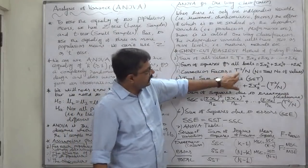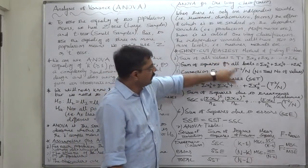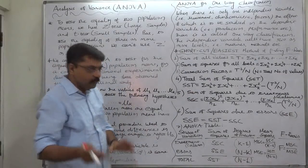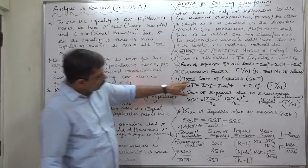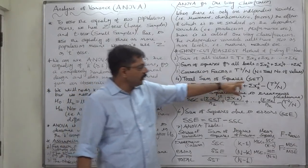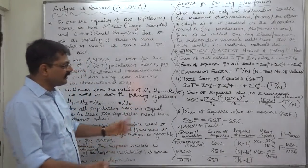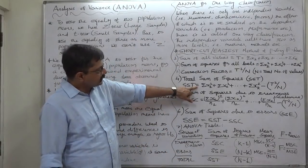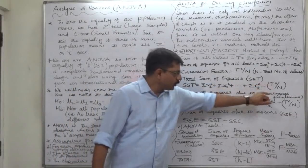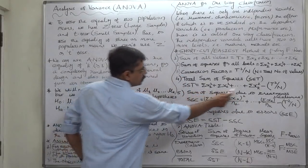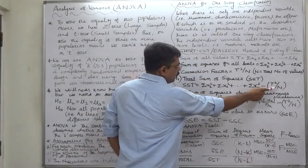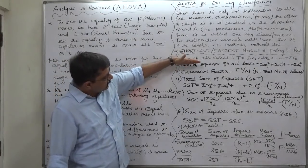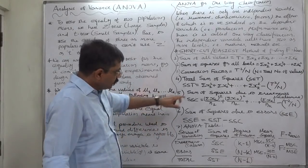These two kinds of small tables will be there with summations of all the columns. Then, the correction factor: what is the correction factor? It is T-squared — from the first step — divided by capital N, where capital N is the total number of values or total number of units under analysis. Number four: total sum of squares, popularly known as SST. That is: sigma-X1-squared plus sigma-X2-squared plus so on up to sigma-XK-squared — the answer of the second step — minus the correction factor, which is the answer of the third step. SST is the difference between our second step and third step.